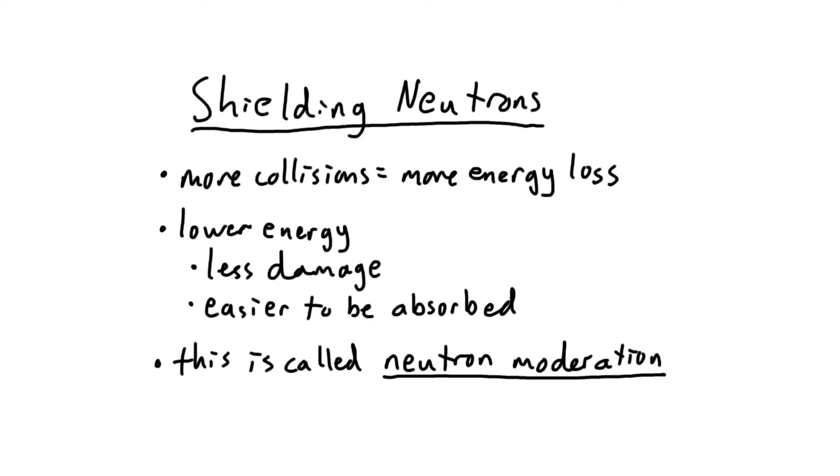If a neutron keeps hitting hydrogen atoms, it'll keep losing energy. And the less energy a neutron has, the less damage it does, and the easier it is for it to be absorbed by a nearby atom, ending its reign of terror. This process of slowing down neutrons is called neutron moderation, and it's important to both effective neutron shielding and nuclear fission, which is a topic for another video.